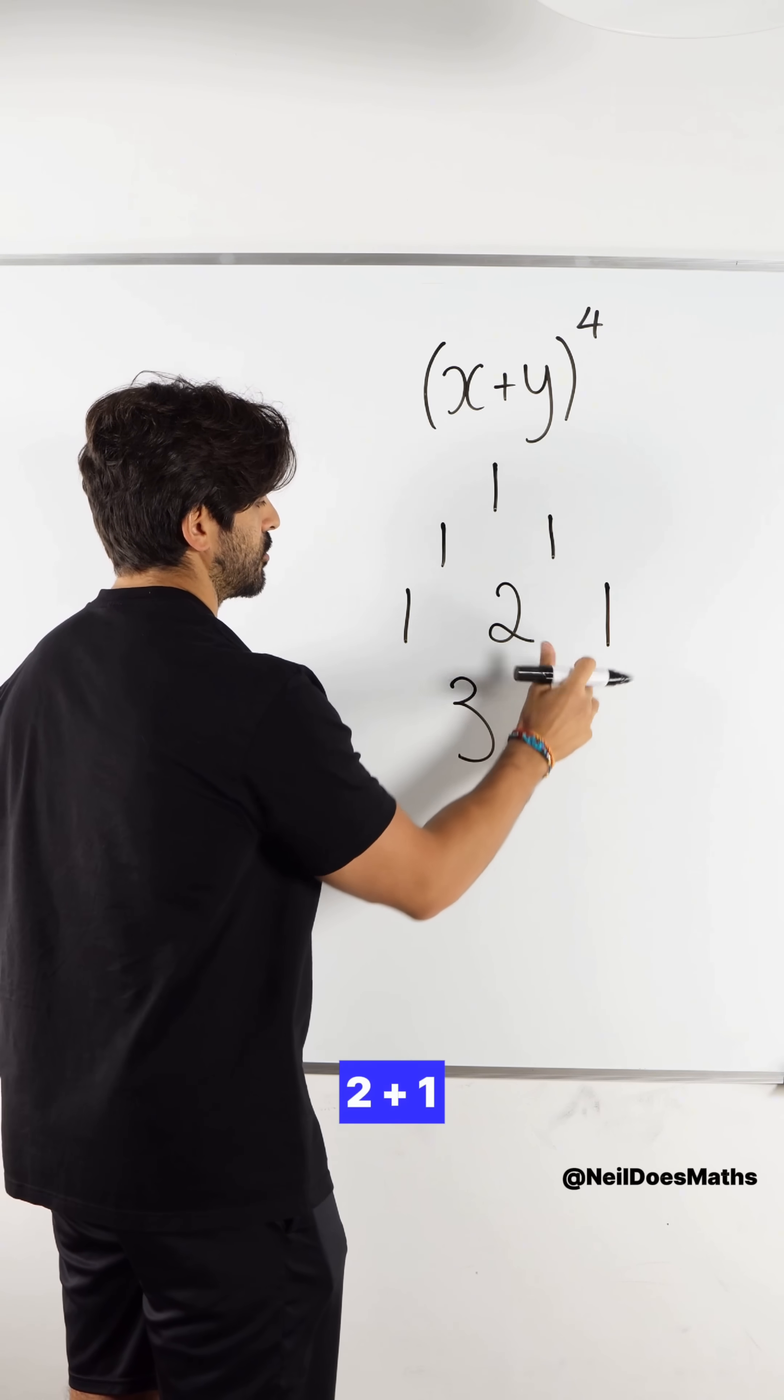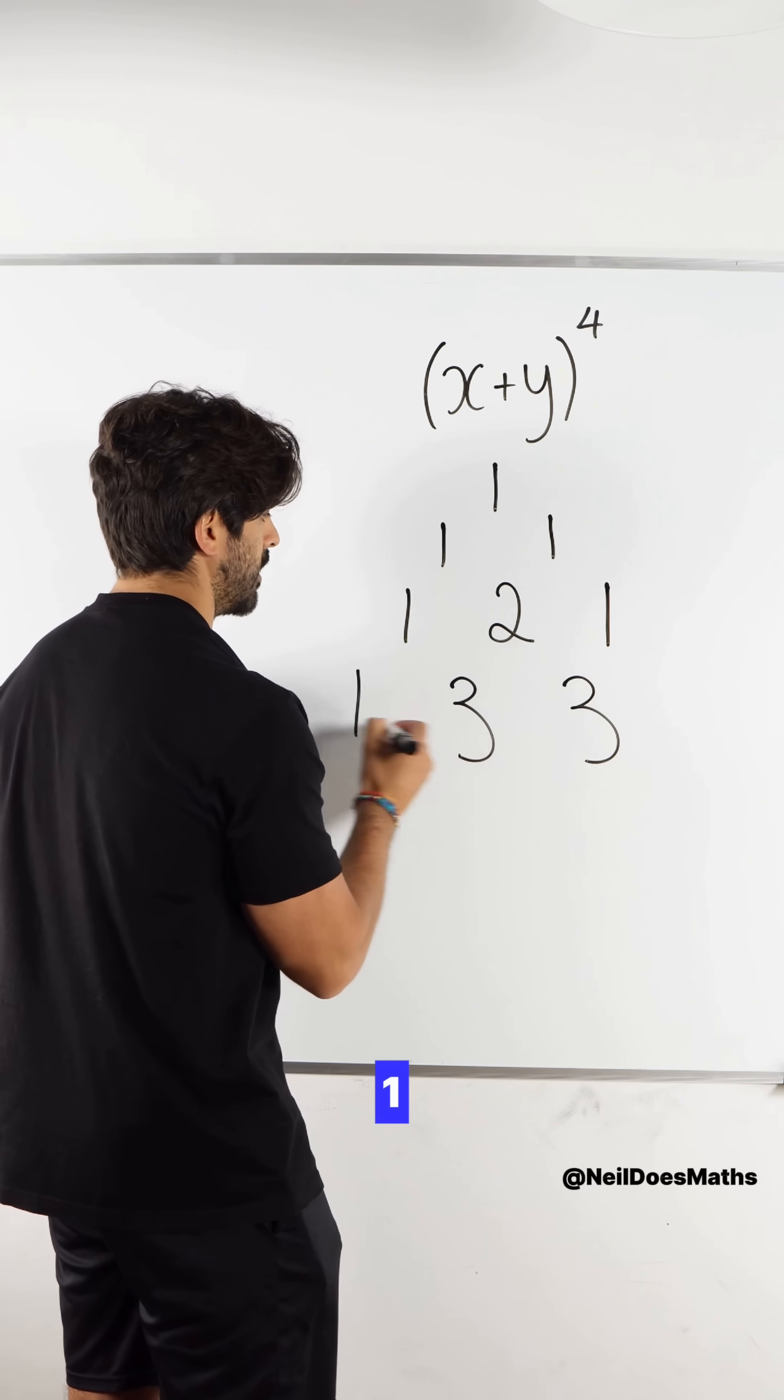Don't forget our leading diagonal of 1. 1 plus 2 is 3. 2 plus 1 is 3. Then 1, 1.